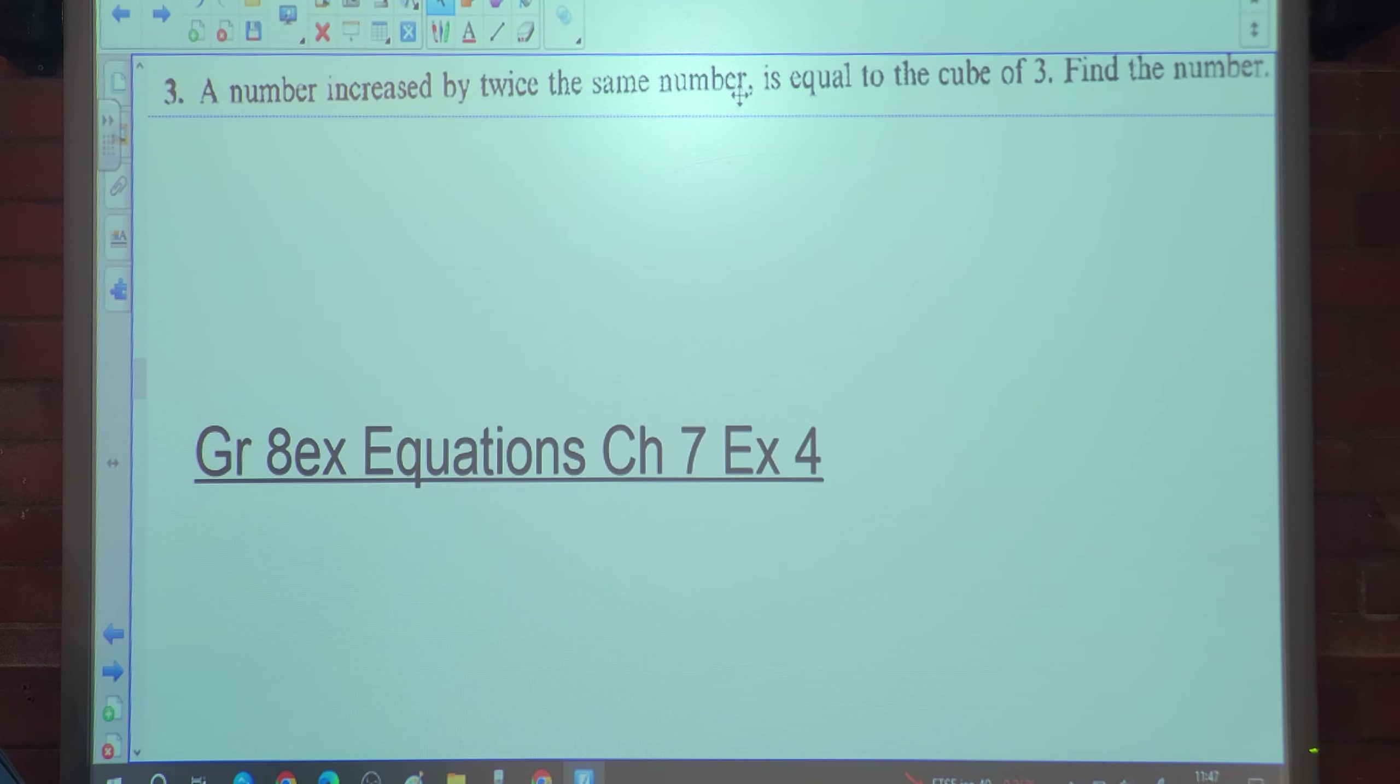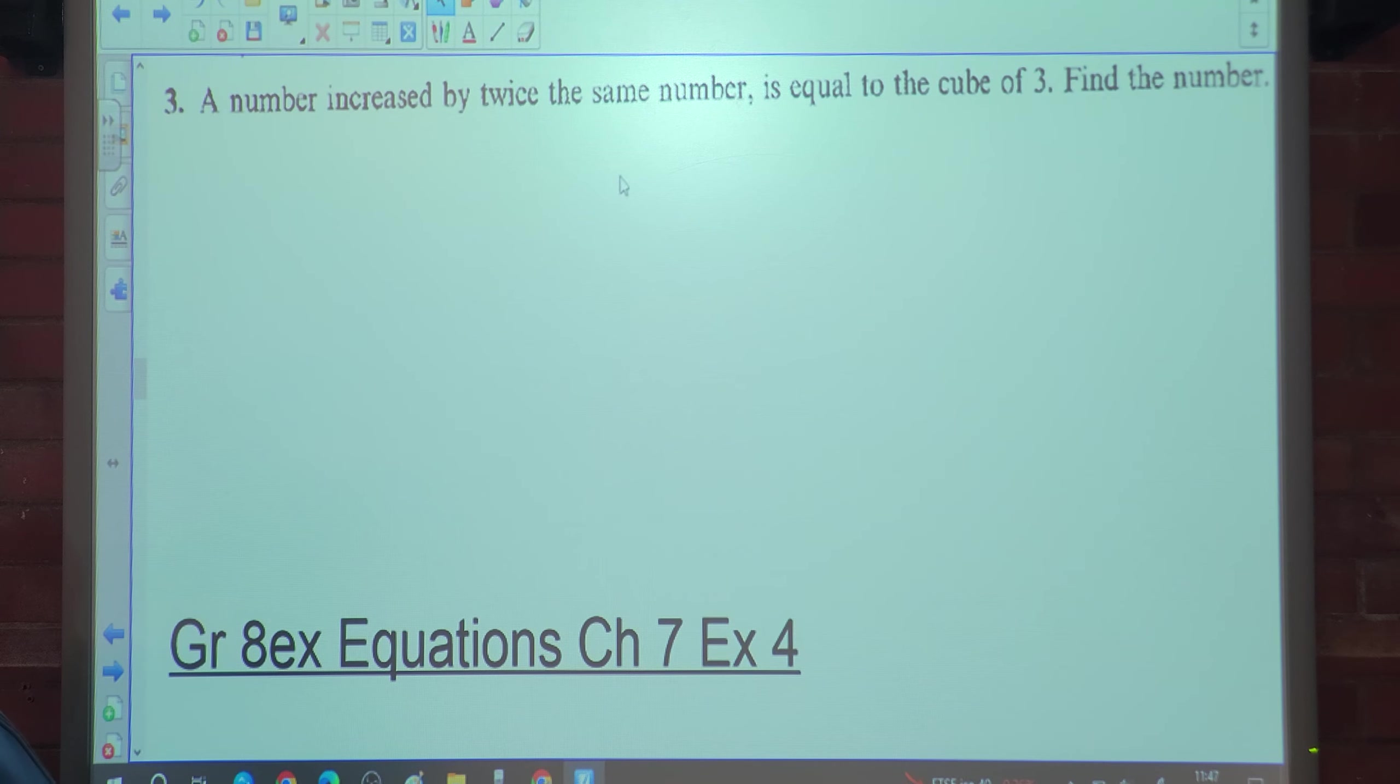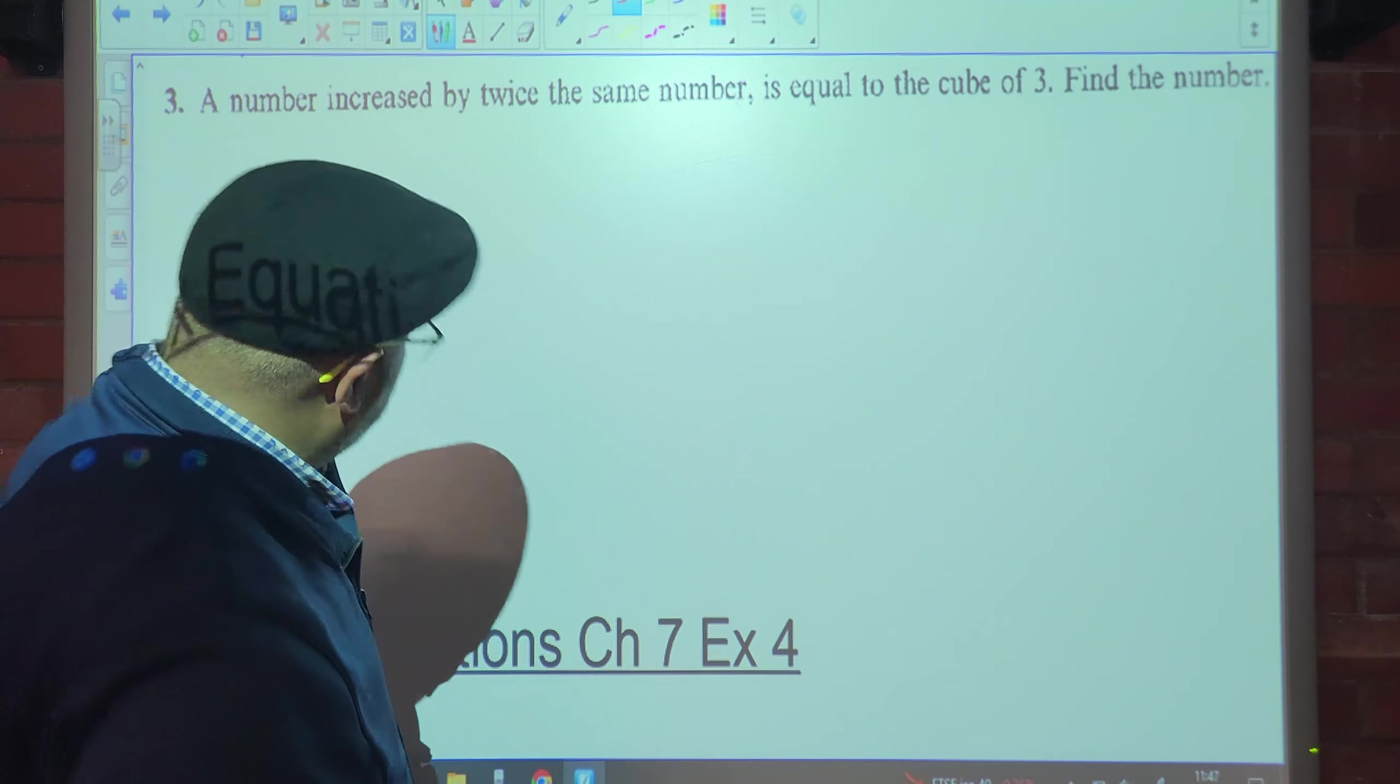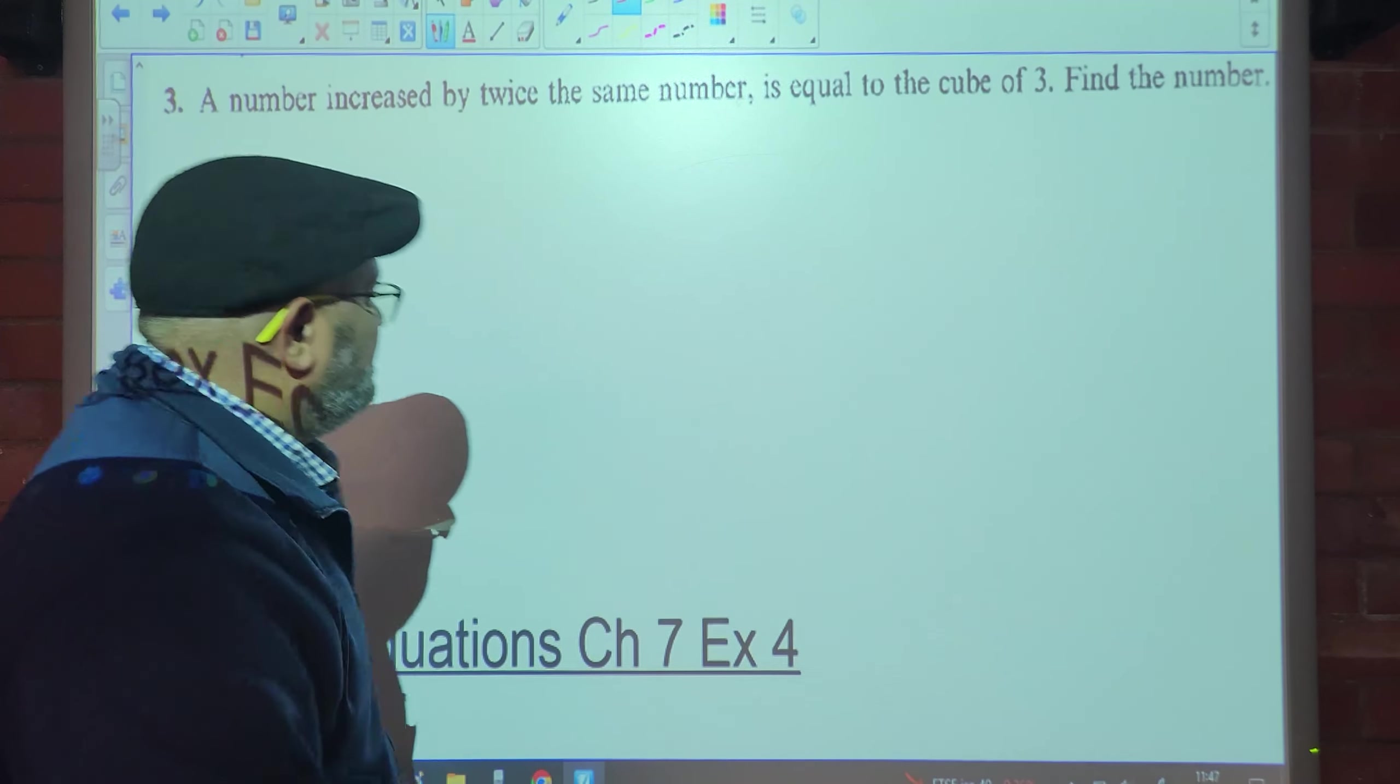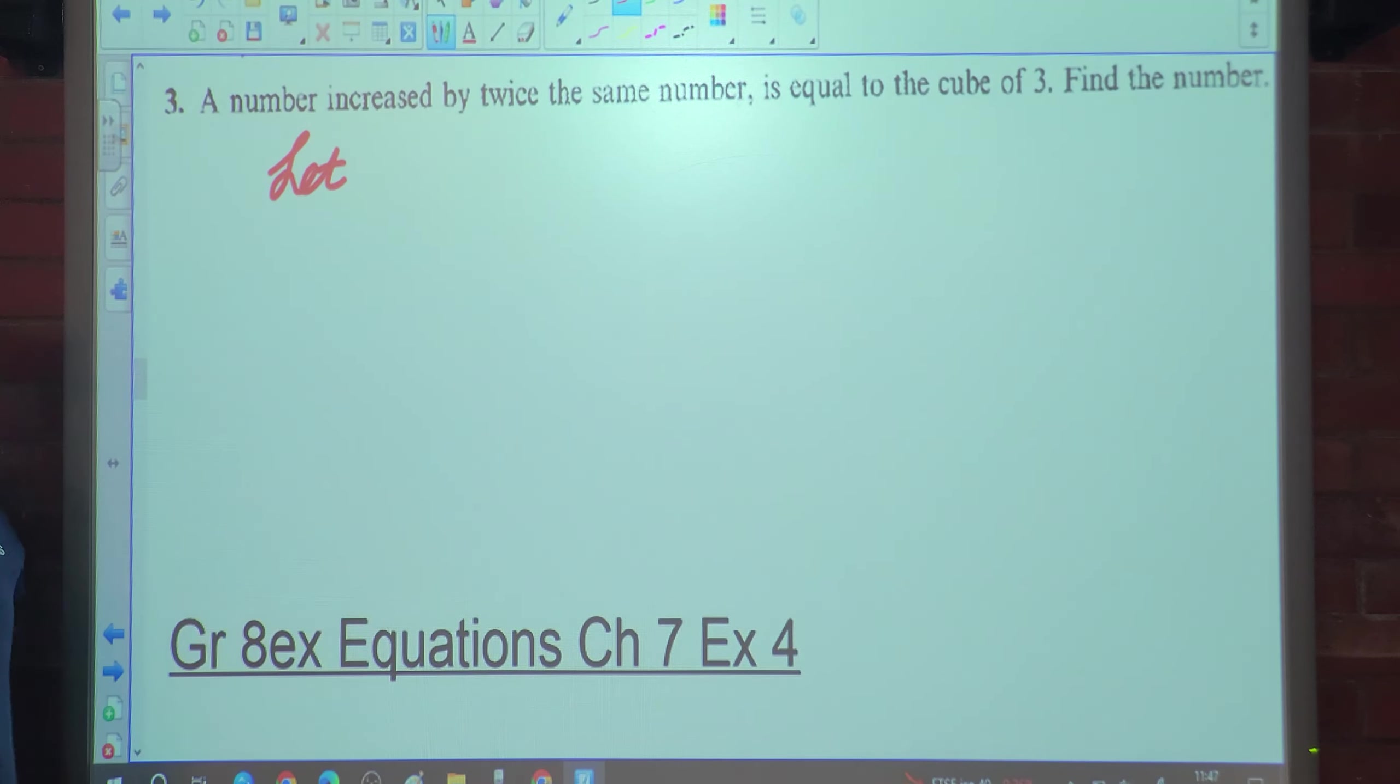Number 3. A number increased by twice the same number. Oh my word, what did I say? What am I going to do now? Only odd numbers. Who said I skipped number 2? Didn't you listen to me as well?